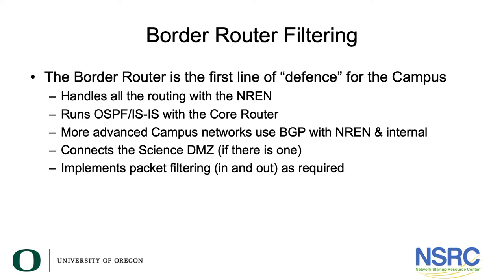More advanced campus networks will also use BGP with the NREN and internally to the campus core router. The border router will also connect to the science demarcation zone if you have one, and this is where you implement your packet filtering inbound and outbound as required.